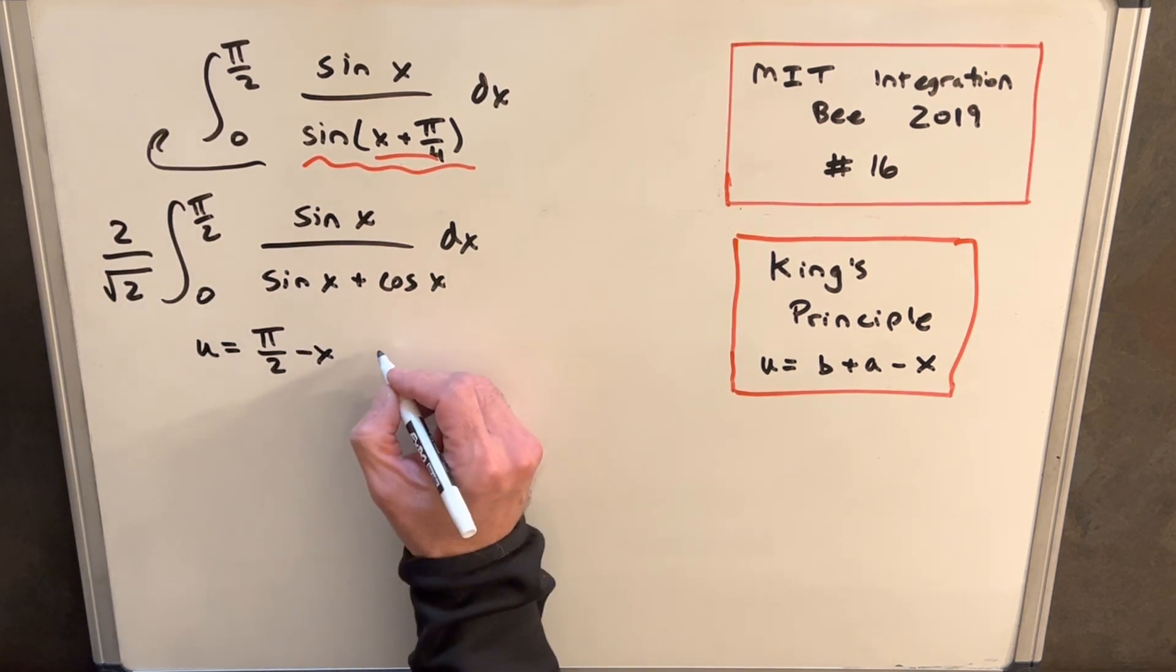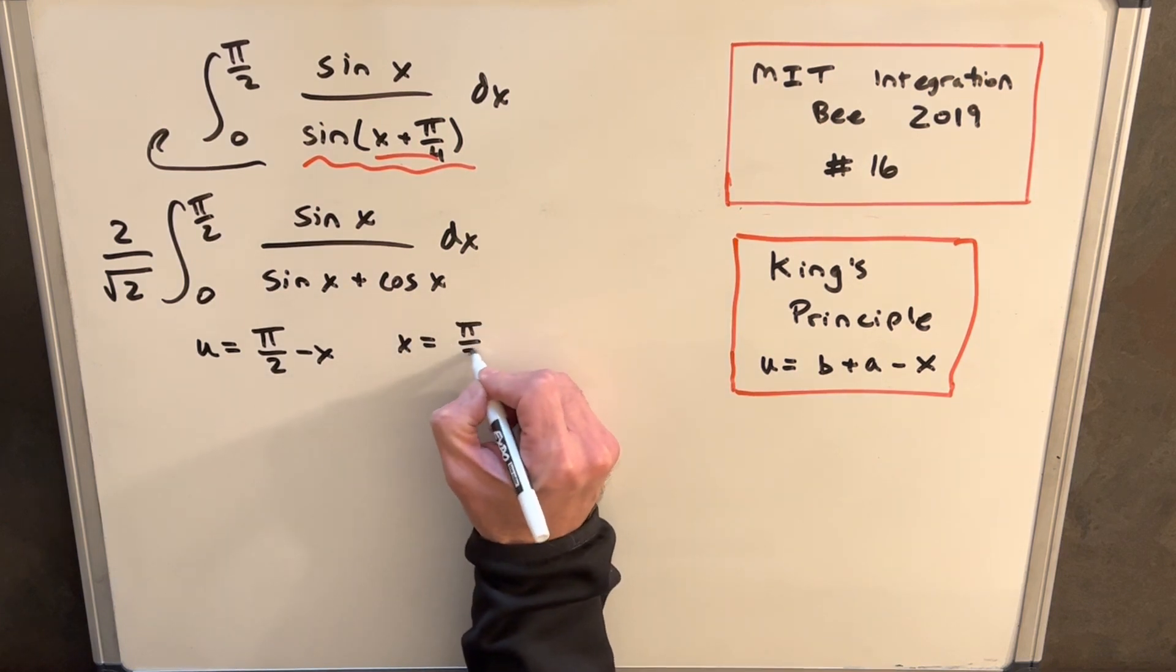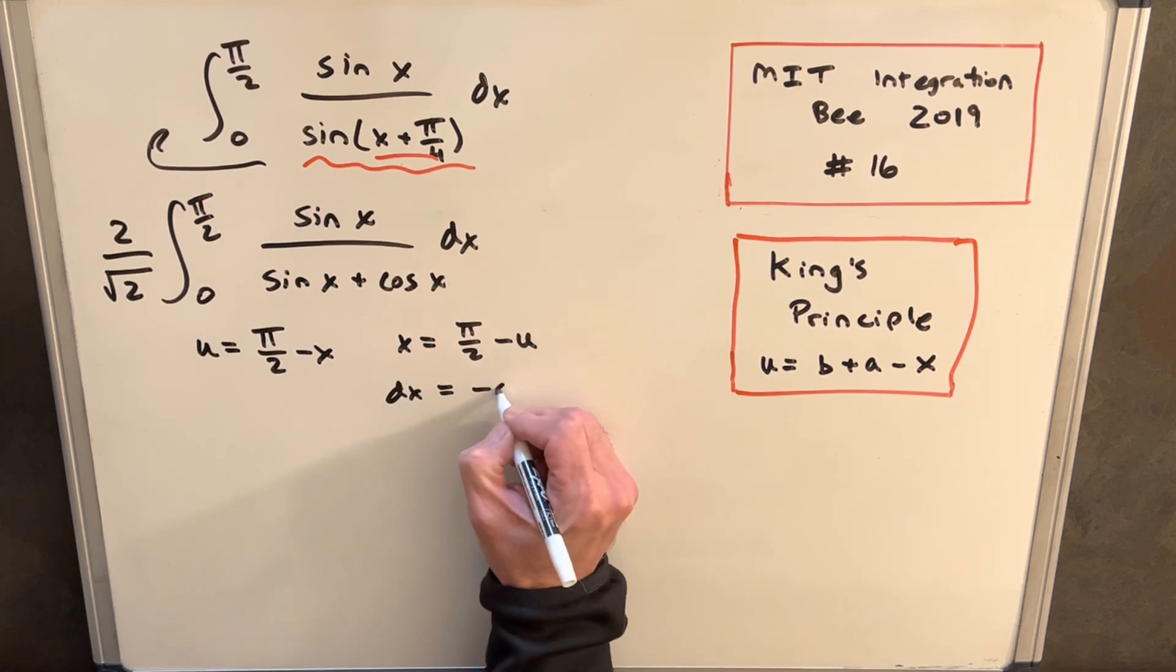And then we can actually rewrite this in terms of x, so we can say that x equals pi over 2 minus u, and then therefore we're just integrating both sides, dx is going to be minus du.